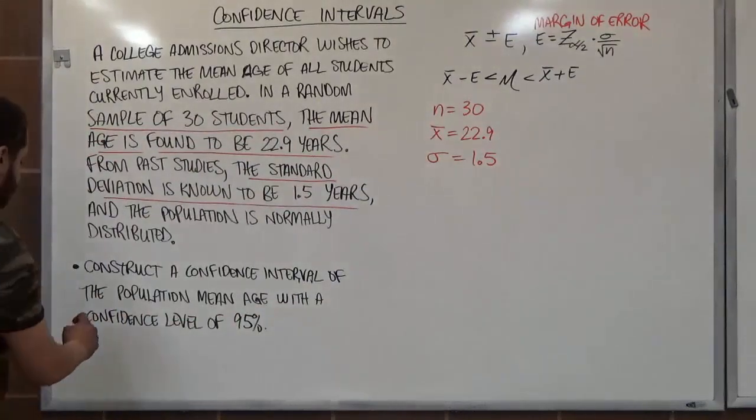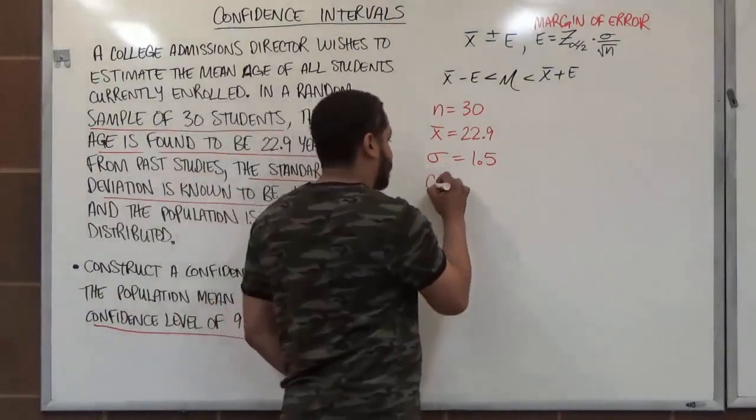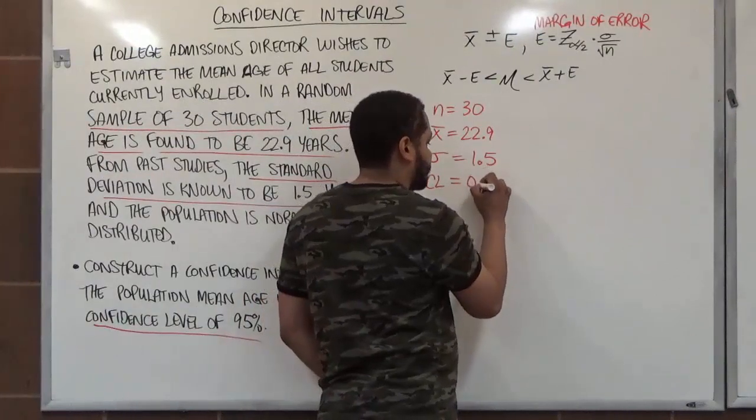Besides this, we also have the confidence level. Confidence level is 95%. So we're going to write here CL equals 0.95.